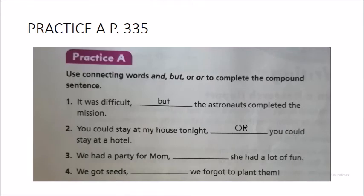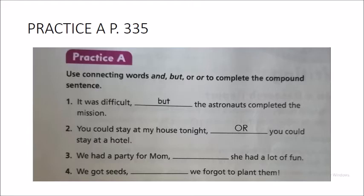Once you have that understood, please open your Cornerstones on page 335 and we're going to do Practice A. I'm going to help you do number 2, and then by yourself you're going to answer number 3 and number 4. Number 1 says: It was difficult, but the astronaut completed the mission. Recuerden que el but es un pero en la oración: Fue difícil, pero el astronauta completó la misión. Recuerden, la palabra or es para ofrecer otra opción. Te puedes quedar en mi casa esta noche o te puedes quedar en un hotel. Ahora tienes las herramientas para realizar la número 3 y 4.